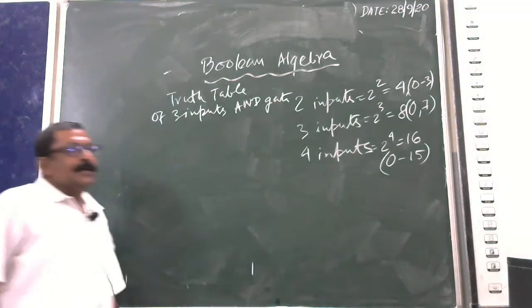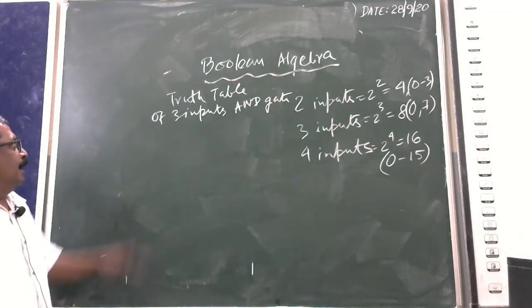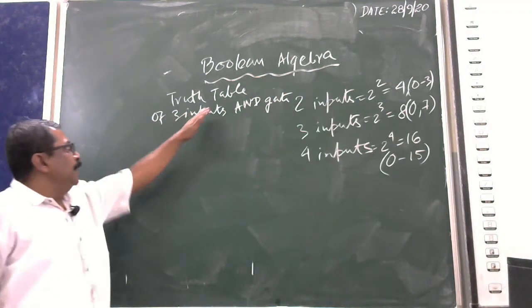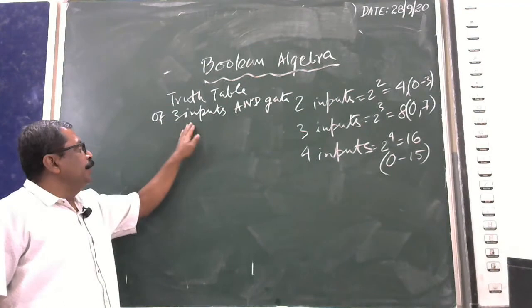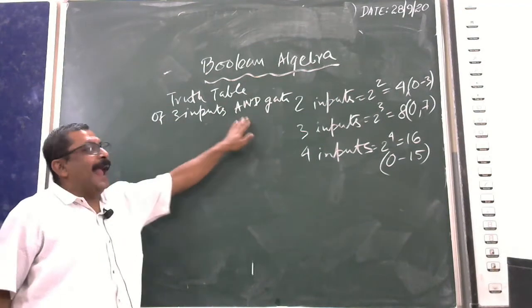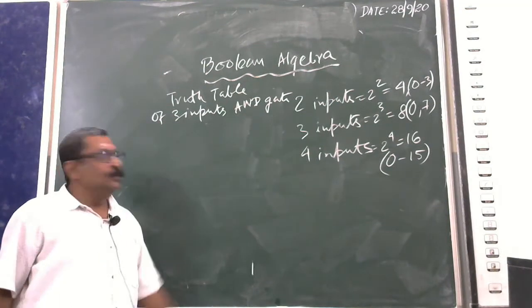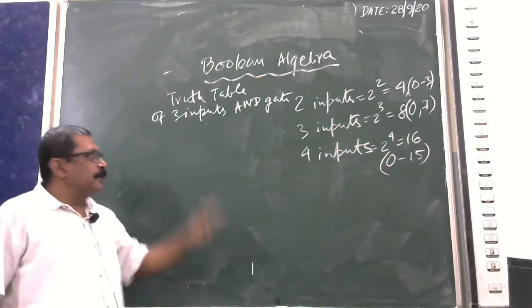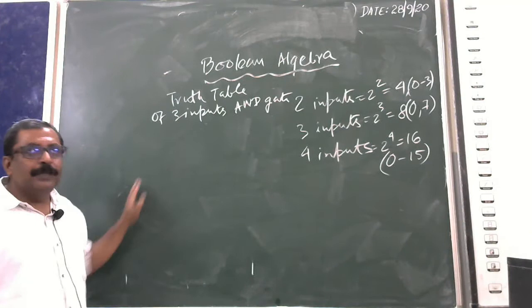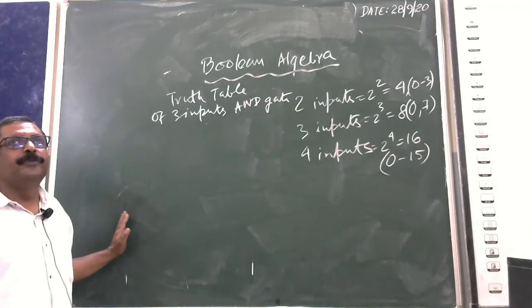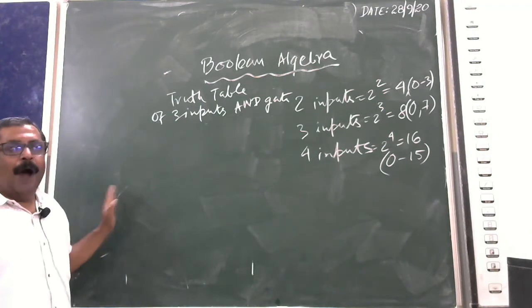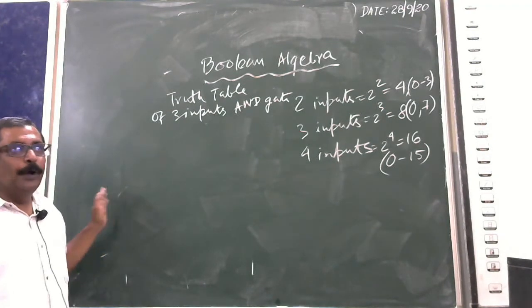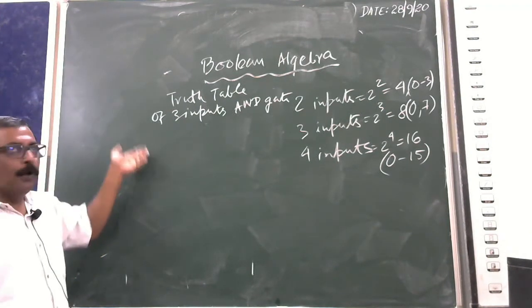Now the first task is the truth table for a 3-input AND gate. You are going to draw the truth table for 3 inputs using the same concept.